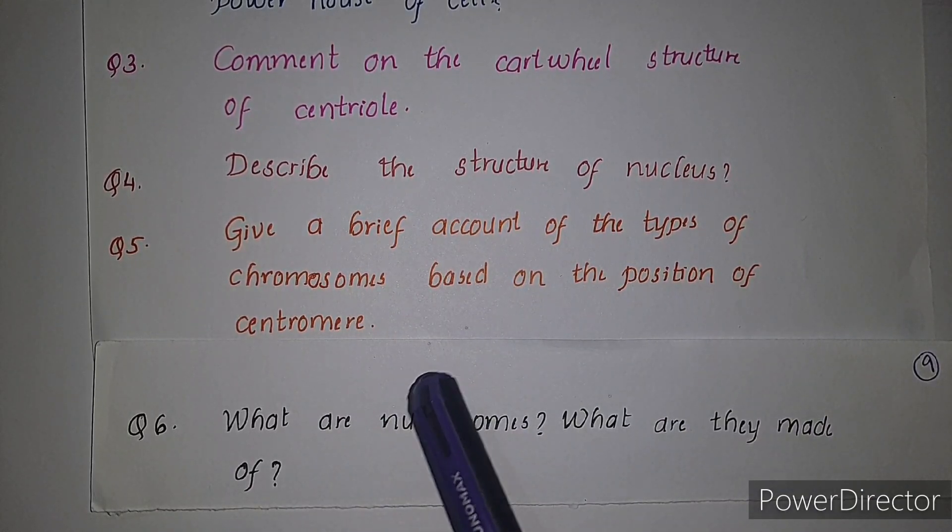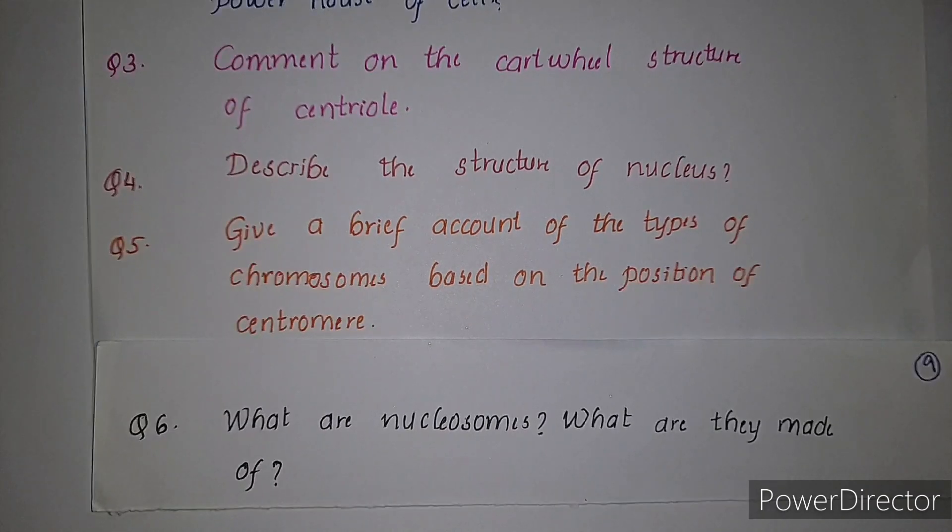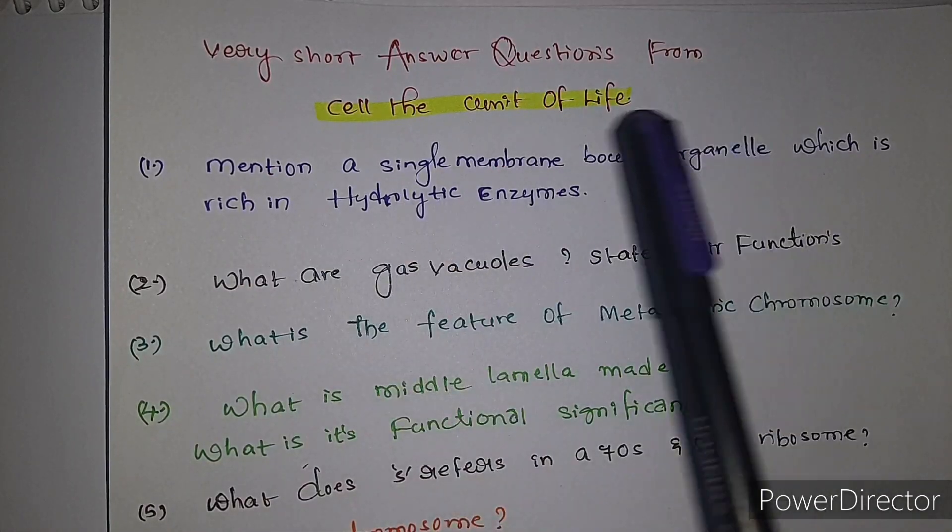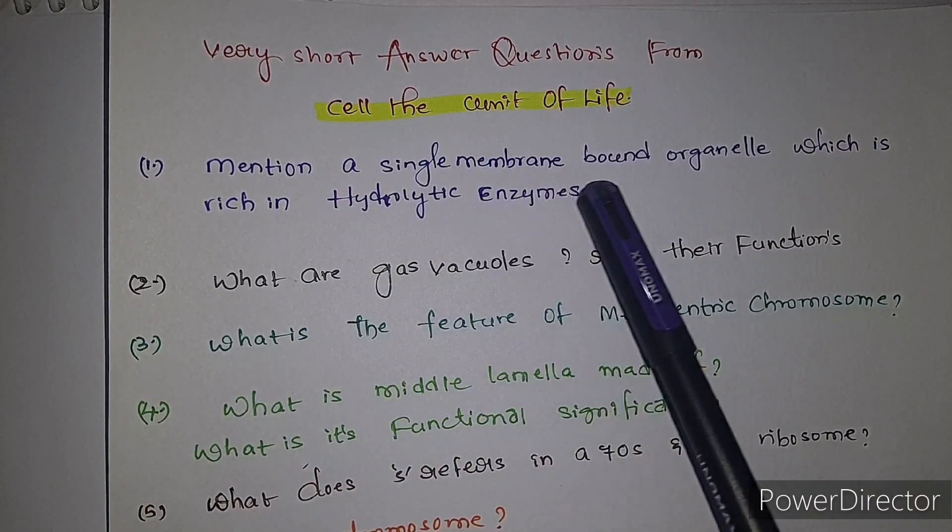Fifth question: give a brief account of the types of chromosomes based on the position of centromere. Sixth question: what are nucleosomes? What are they made of?